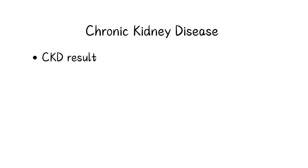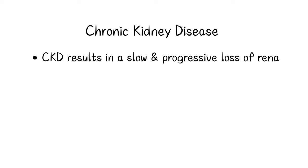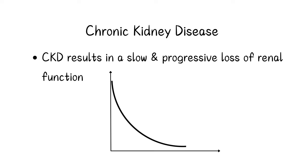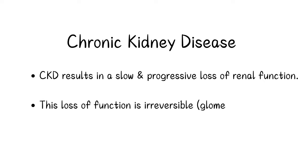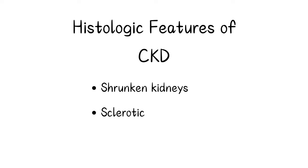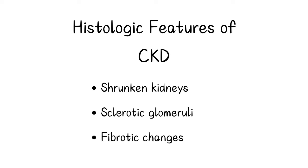CKD results in a slow and progressive loss of renal function — so slow and silent during the initial stages that until 50% of your kidney function is gone, your blood creatinine report will be normal. This loss of function is irreversible as the injury is often on glomeruli, which do not regenerate like kidney tubules in acute kidney injury. Histologic features of CKD include shrunken kidneys, sclerotic glomeruli, and fibrotic changes.